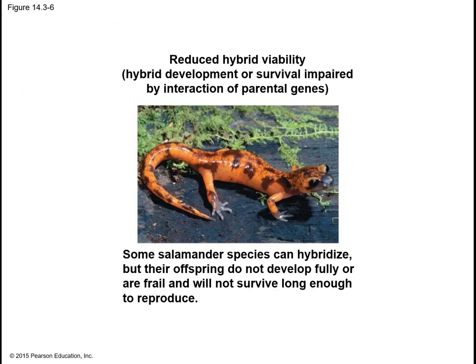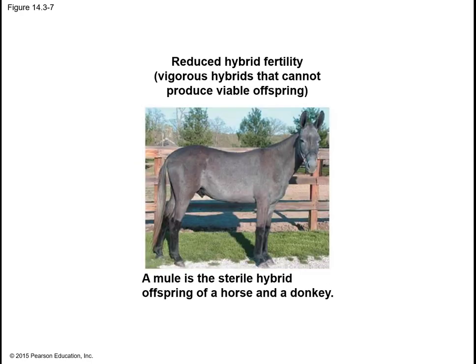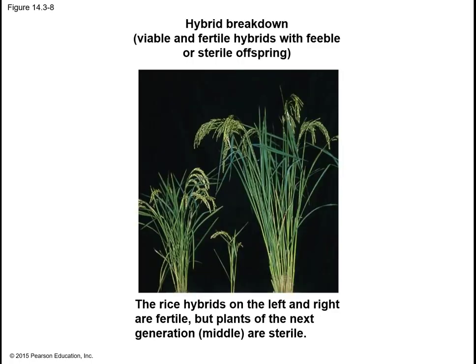For reduced hybrid viability, some salamander species can hybridize, but their offspring don't develop fully or are frail and won't necessarily survive long enough to reproduce. For reduced hybrid fertility, the mule is the classic example — the hybrid offspring of a horse and a donkey — strong and vigorous, but cannot produce viable offspring. For hybrid breakdown, rice hybrids on the left and right are fertile, but plants of the next generation are sterile.